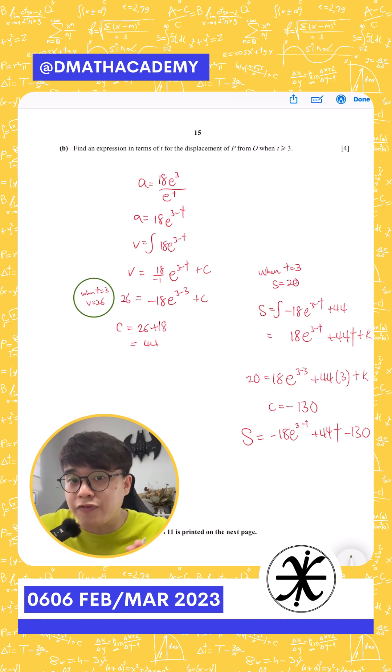This will help you to find the constant needed for you to form this equation here when t is more than or equal to 3. Same goes to the second integration process where you are trying to trace the displacement equation. So when t equals to 3, your s is 20.